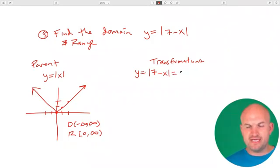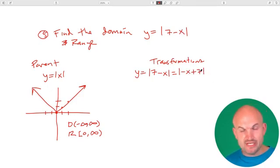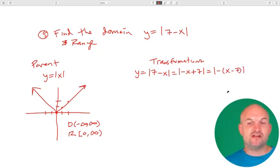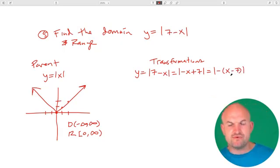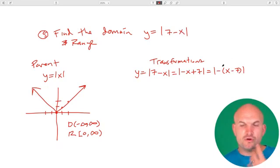So first thing I do is I rearrange this to be negative X plus 7. You have to factor out that negative. So therefore, this is in the form negative X minus 7. And this is very important to understand. What we notice is there's only two transformations going on. We're multiplying by negative. Our X is being multiplied by negative, and then we're subtracting by a 7.